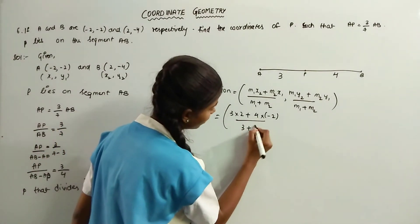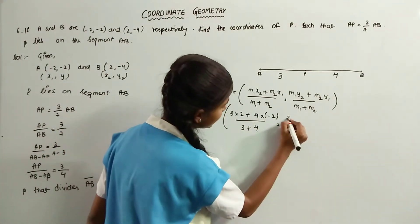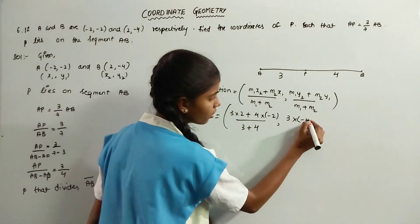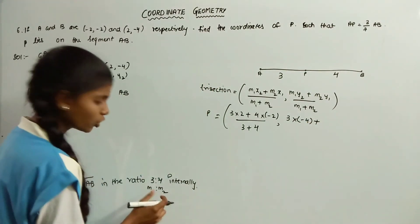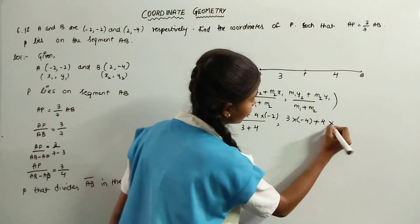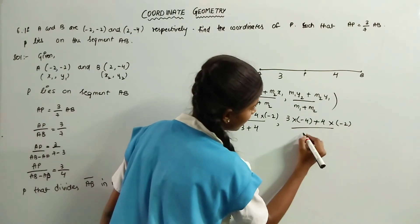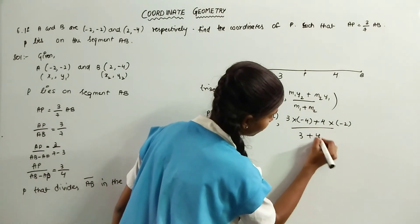Comma, M1 is 3 into y2 is minus 4 plus M2 is 4 into y1 is minus 2, divided by M1 plus M2 is 3 plus 4.